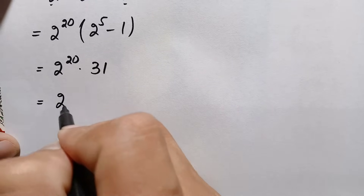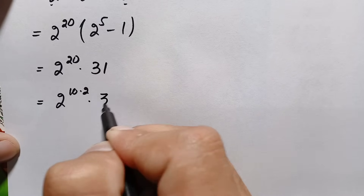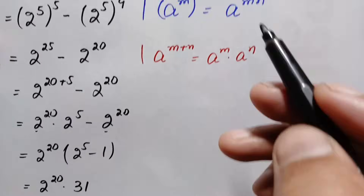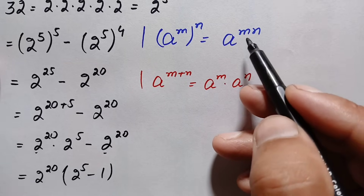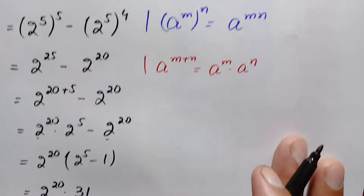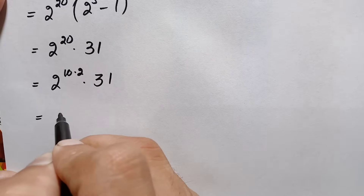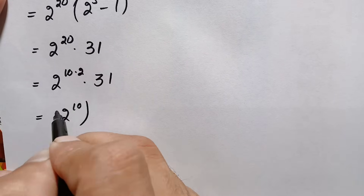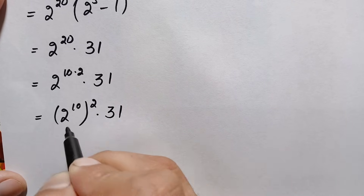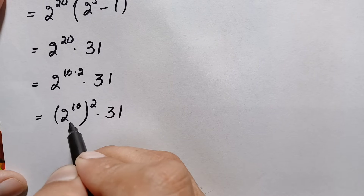We write 2 raised to power 20 as 2 raised to power (10 times 2), which equals (2 raised to power 10) whole raised to power 2. Using the exponential identity a raised to power m times n equals (a raised to power m) raised to power n, this becomes (2 raised to power 10) squared. We will find the value of 2 raised to power 10 first.